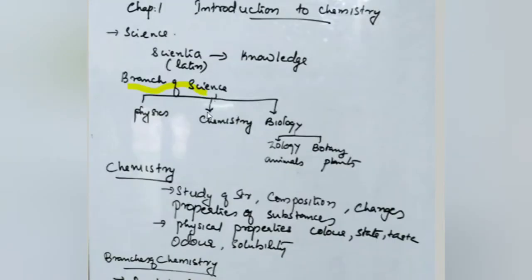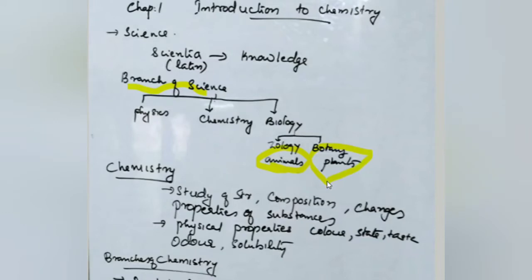The three branches are physics, chemistry, and biology. Biology has again been classified into two: zoology and botany. Zoology deals with the study of animals; botany deals with the study of plants. Physics deals with measurements — whatever units and measurements come under physics.